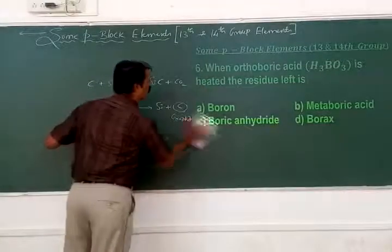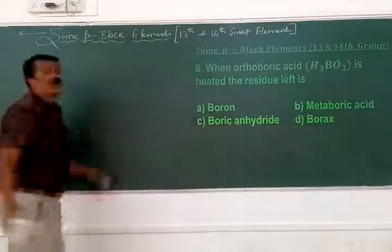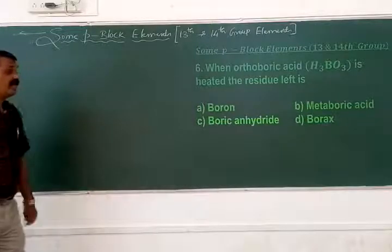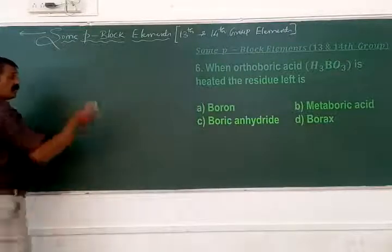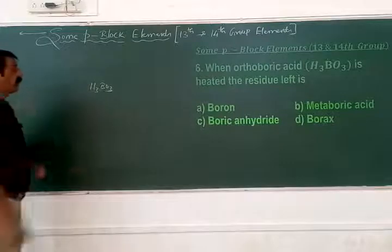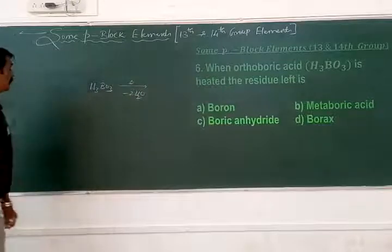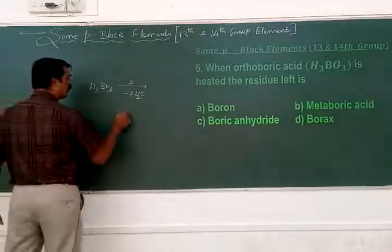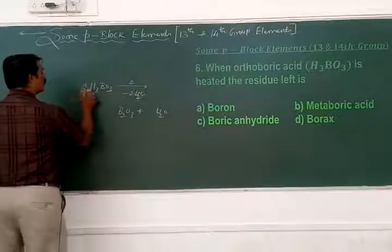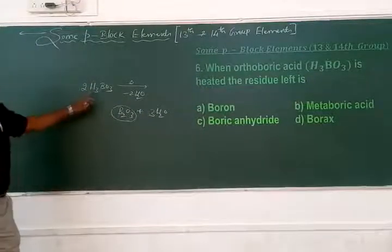The sixth question asks what happens when orthoboric acid is heated. When H₃BO₃ (orthoboric acid) is heated, it loses water molecules. After removal of water, it forms B₂O₃ plus H₂O (balanced as 2H₃BO₃ → B₂O₃ + 3H₂O).